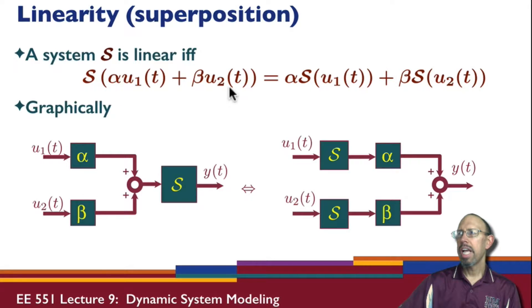So what does that mean exactly? Graphically it looks like this: If I take two signals u1, u2, multiply them by scalars and add them, then the system operates on that sum, the output of this summation, and that's the output of the system.